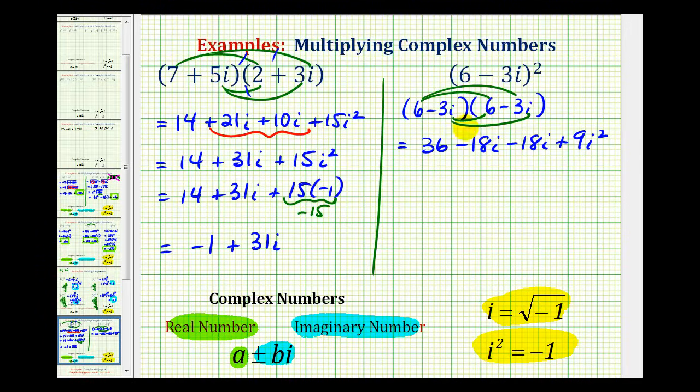And now again, we need to simplify the two middle terms, our like terms, or imaginary numbers, which we can combine. And then we need to substitute negative one for i squared. So we'd have thirty-six, this is going to be minus thirty-six i. And then here we'll have plus nine times negative one. Well nine times negative one is equal to negative nine, so now we can add thirty-six and negative nine, which would give us twenty-seven. So our final product would be twenty-seven minus thirty-six i.